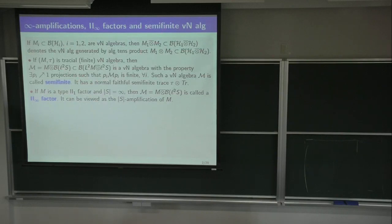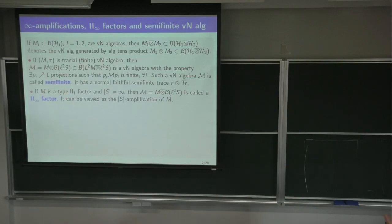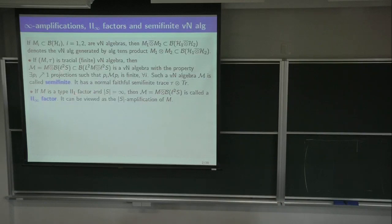If you take M to be a II₁ factor, and the set S to be infinite, then this tensor product is what one calls a II∞ factor — an infinite amplification of M, namely an S-amplification of M, or rather the cardinality-of-S amplification of M. When S is countable — the set of natural numbers — that's the way you should view these II∞ factors: as a limiting process. Very much an analogy with the way you get B(ℓ²(ℕ)) from finite matrices put in corners completed with zero and growing.